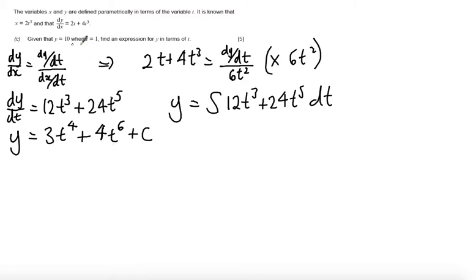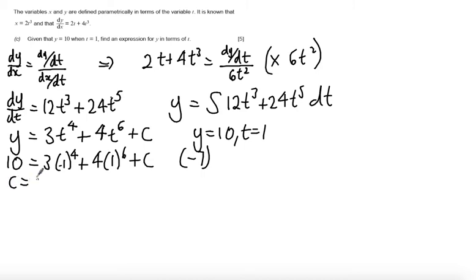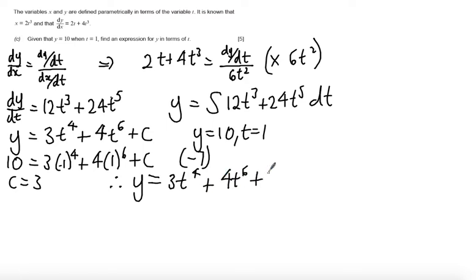Now we use the condition y equals 10 when t equals 1. Substituting in: 10 equals 3 times 1 to the power of 4, plus 4 times 1 to the power of 6, plus c. Since 3 plus 4 equals 7, subtracting 7 from both sides gives c equals 3. So the full expression for y is 3t to the power of 4 plus 4t to the power of 6 plus 3.